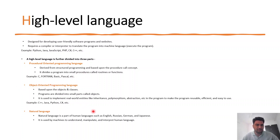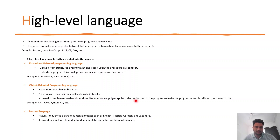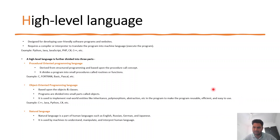Object-oriented languages are very popular nowadays. They are based upon objects and classes, which we will explain in coming classes. Programs are divided into small parts called objects. They are used to implement real-world entities like inheritance, polymorphism, and abstraction. For example, inheritance can be seen in humans — properties of a father are passed to his son. Examples of OOP languages include C++, Java, Python, and C#.